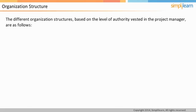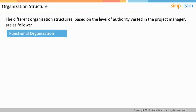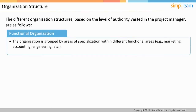Projects are performed in an organization and the functioning of the organization might affect the project. The different organization structure types explained here are based on the level of authority that a project manager gets in those organizations. In a functional type of organization, the organization is grouped by the area of specialization within different functional areas, such as marketing, accounting, engineering, etc.